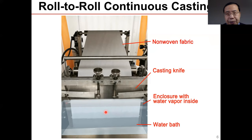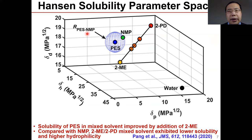After VIPS, we immerse the film into a liquid water bath to remove the solvent and non-solvent from the substrate. Here we show the Hansen solubility parameter space. You can see the distance between NMP and PES is very close, which is the reason why NMP is the common solvent used to dissolve PES.